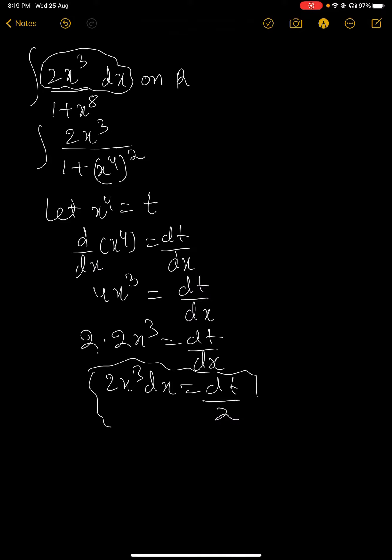Substitute this into the numerator, and then the problem changes to dt by 2 into 1 plus t squared.